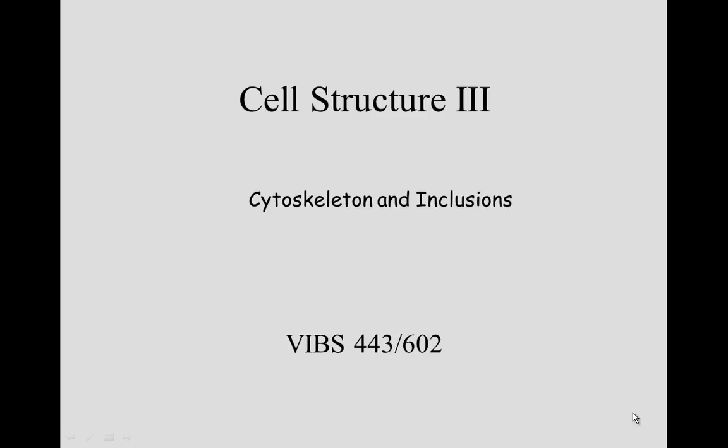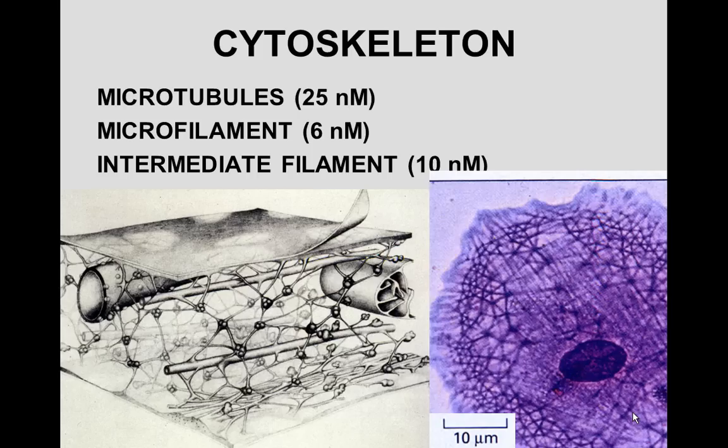Cell structure 3 has to do with cytoskeleton and inclusions. The cytoskeleton is composed of three different components. You have microtubules, which are the largest component. And then you have microfilaments, which are the smallest component — this is a filament, not a tube. And then you have intermediate filaments as well.